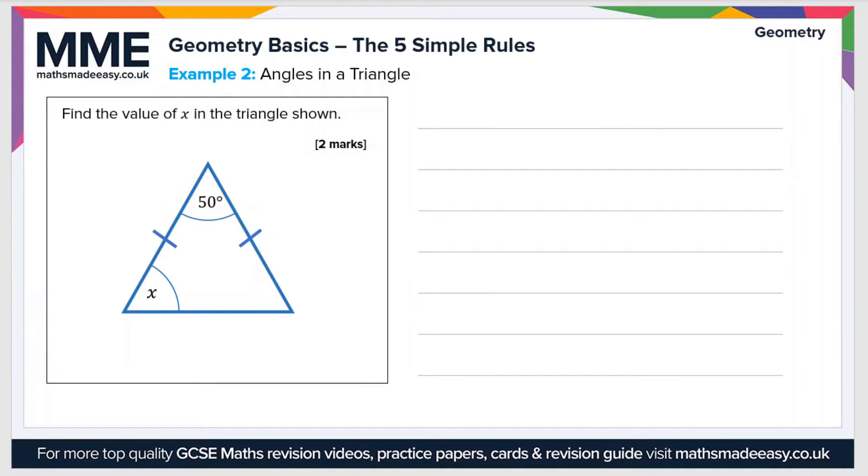Now we can see that this is an isosceles triangle because the two sides have been labeled as equivalent. So that means that this other angle at the base is also x. And then using rule number one, we can say that x plus x plus 50 equals 180 degrees, so all angles in a triangle sum to 180 degrees.